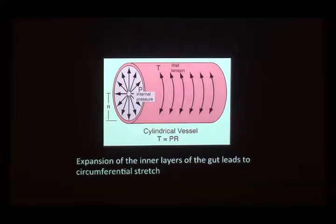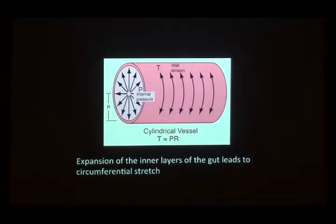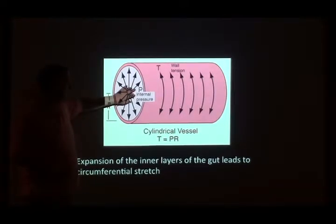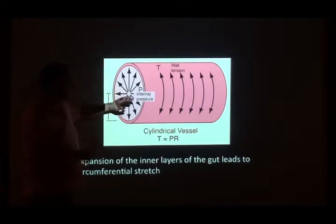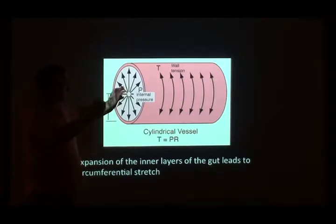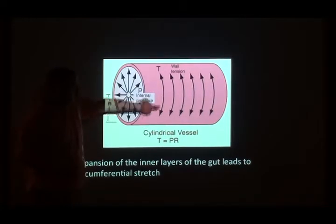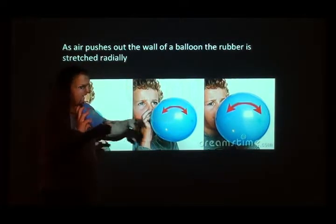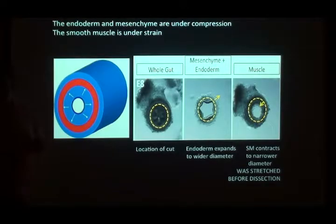We thought about this in the context of the gut. As the inner part of the intestine is proliferating and growing, it's pushing outward on the smooth muscle. The smooth muscle doesn't proliferate as much, so it becomes a barrier — and all the inner tissue keeps proliferating, producing tension that runs circumferentially. This is the same thing as blowing up a balloon: as you blow it up, the stretch is not inside-out, the stretch is on the surface.